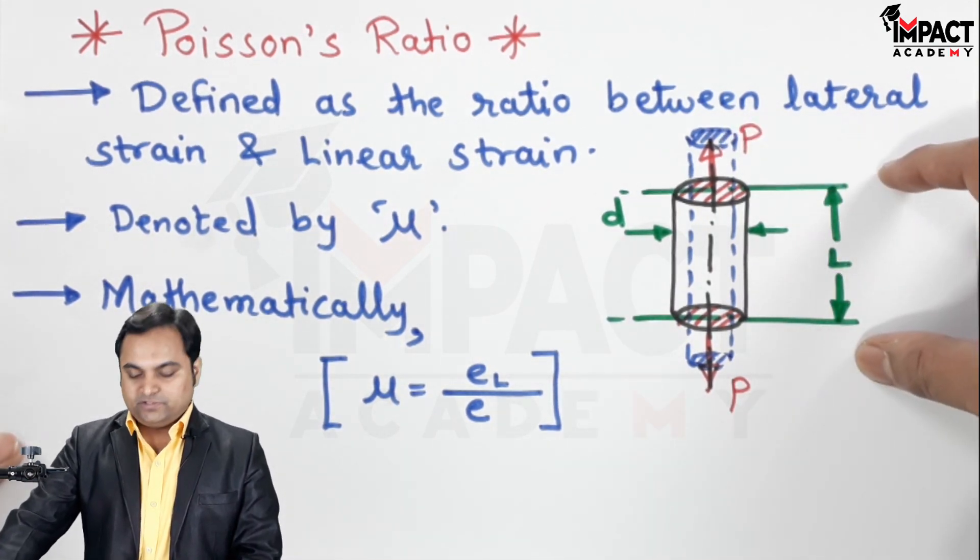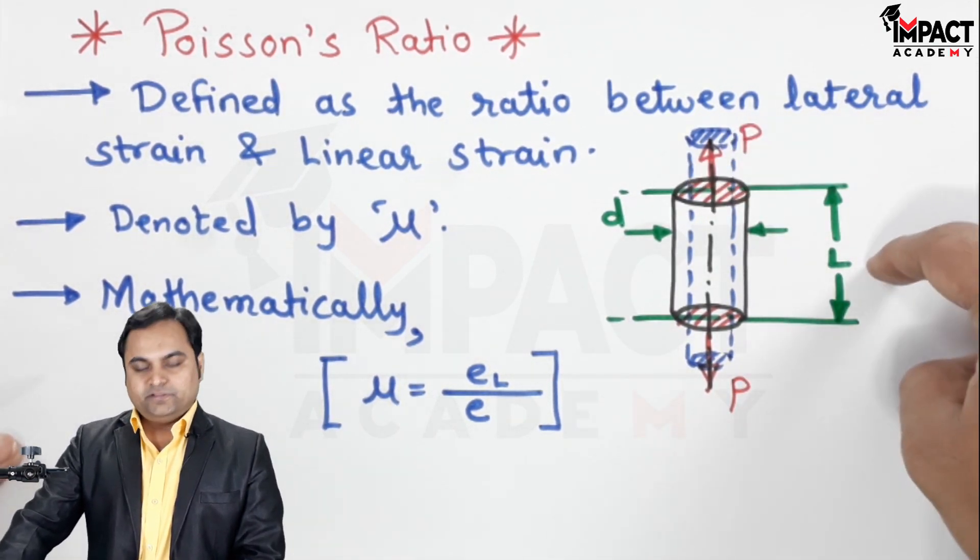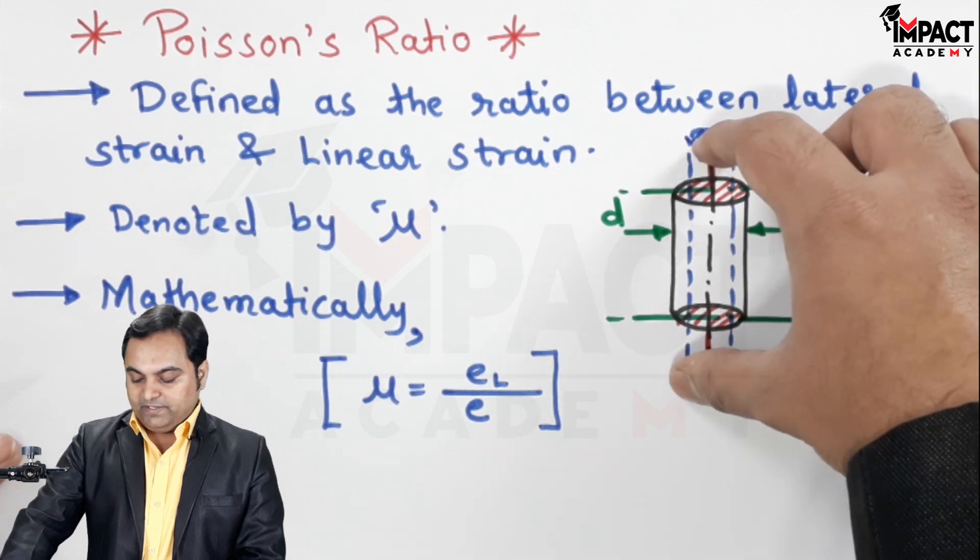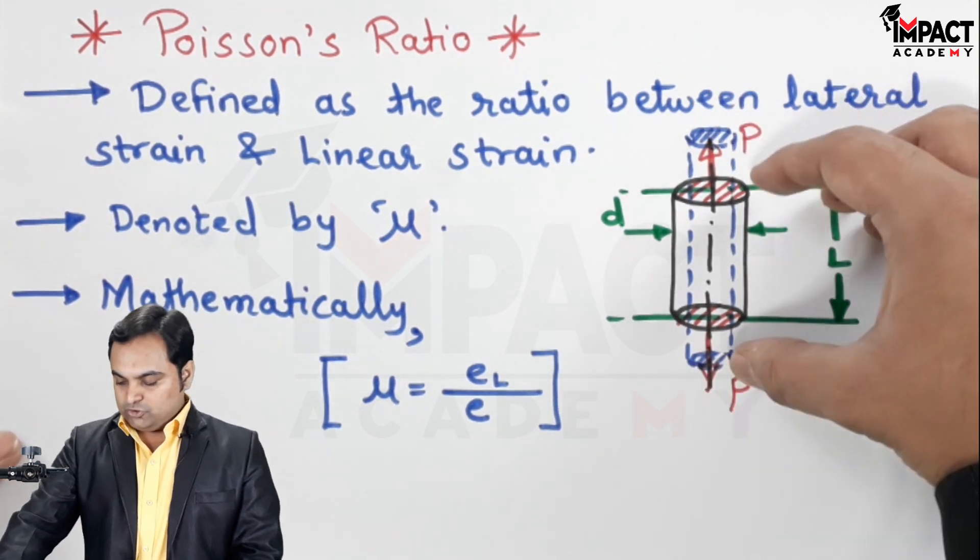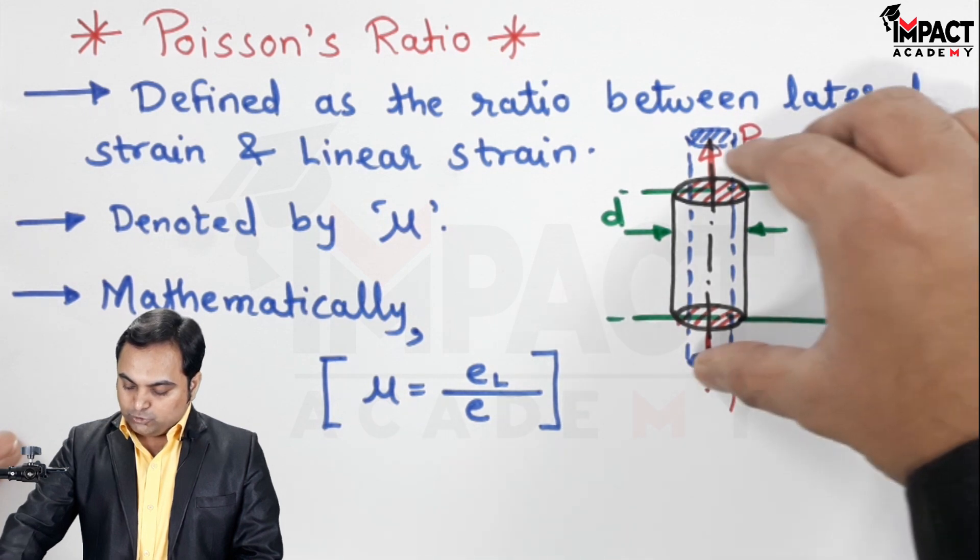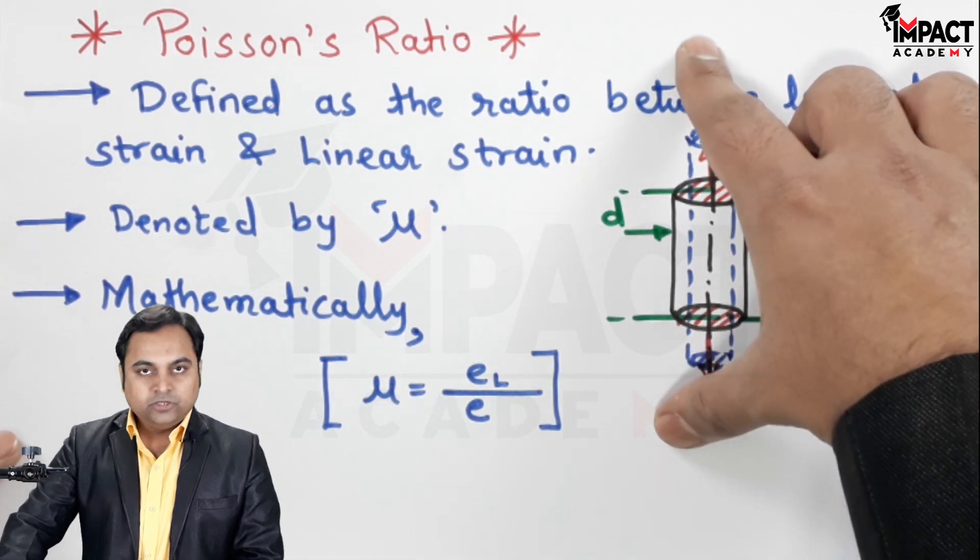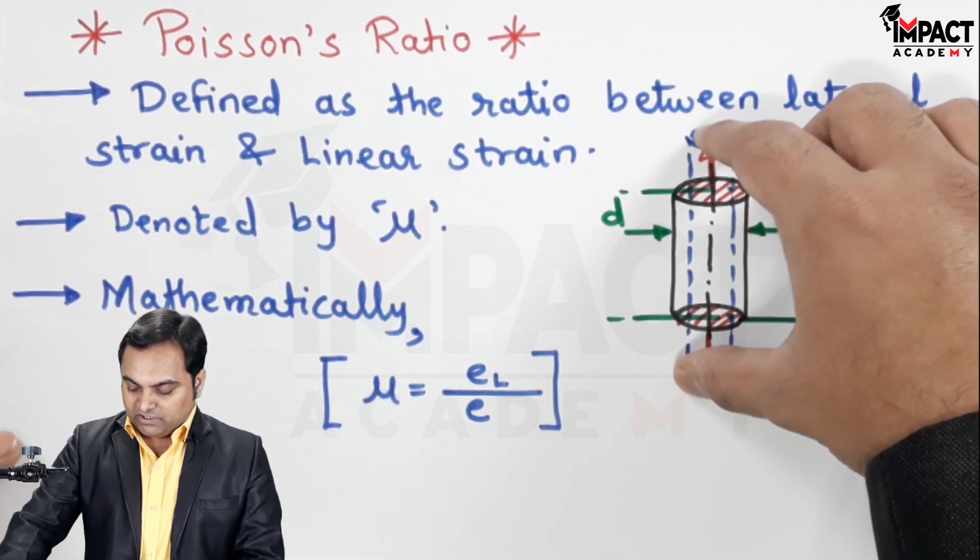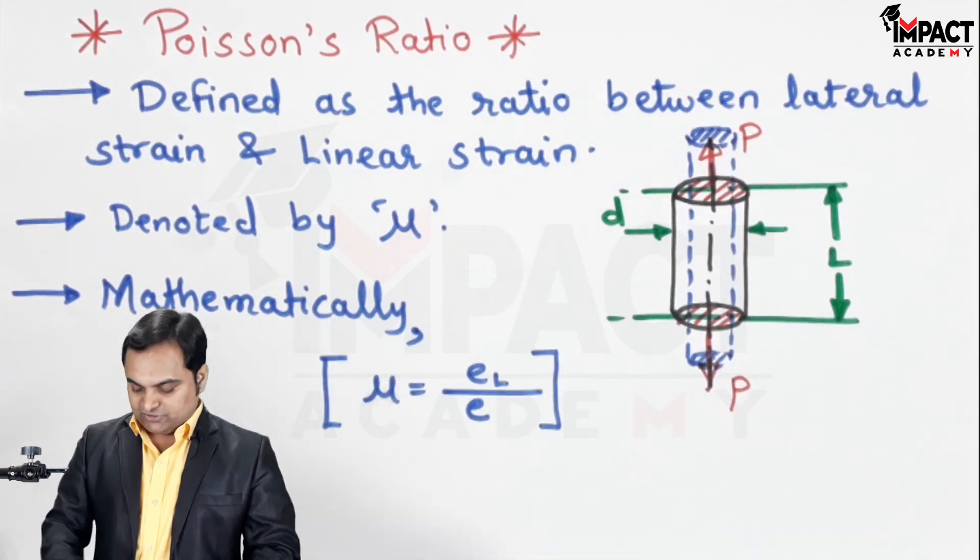Now here the load is parallel to length, so the effect on the length because of the load would be termed as the linear effect. So because of this load being parallel to L, the rod is being pulled, so the increase in the length is called as the linear strain.